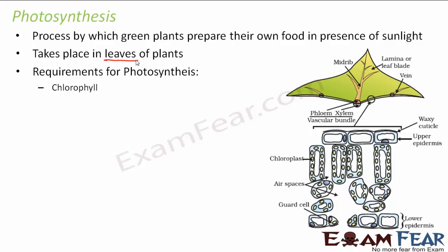Inside the cell organelle chloroplast we have a green colored pigment which is known as chlorophyll, and the presence of this pigment chlorophyll is extremely important for performing photosynthesis. Here you can look at the cross section of a leaf. In this much thickness you have so many things. That thickness consists of the upper epidermis — the outer layer — and after the epidermis we have the chloroplasts. You can see some green colored pigments here; they are the chloroplasts, and inside the chloroplasts the green color is contributed by the pigment called chlorophyll.